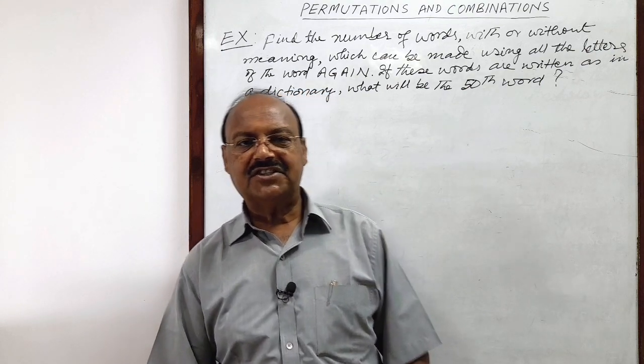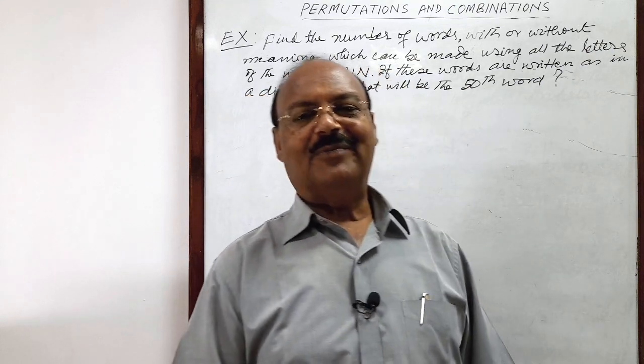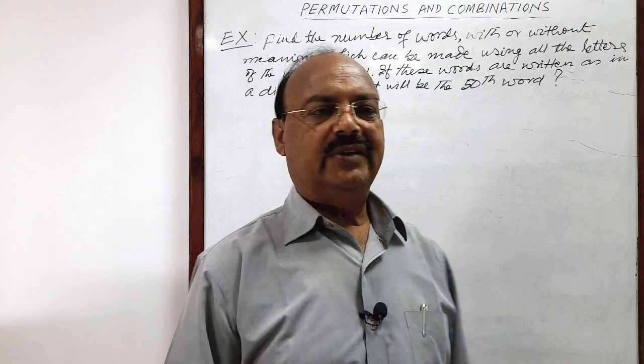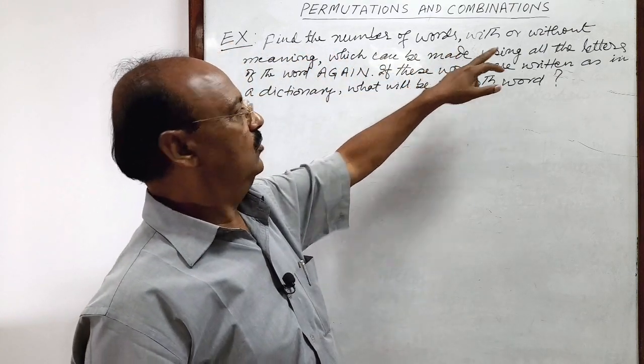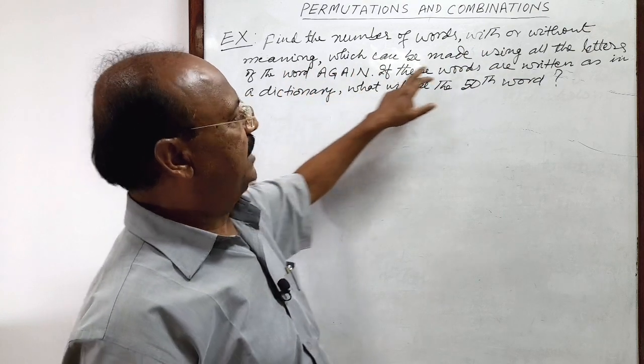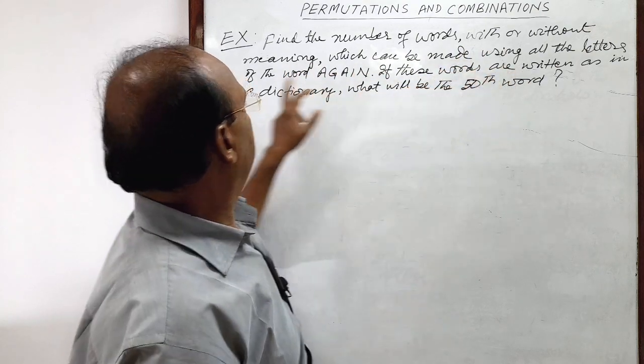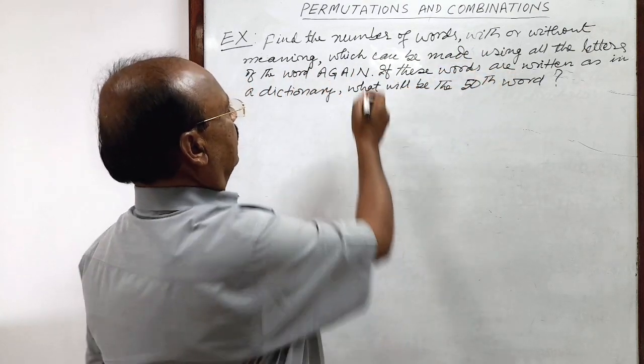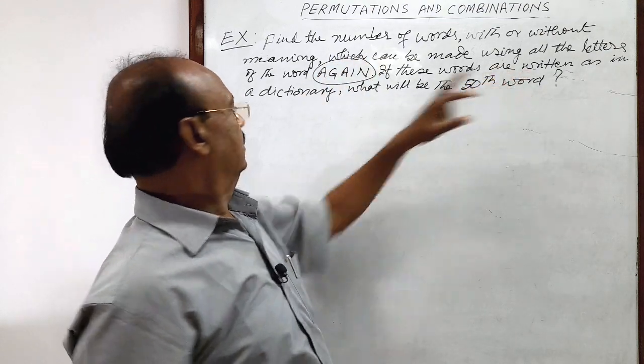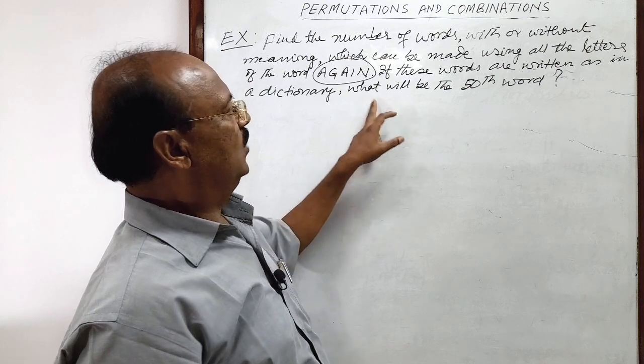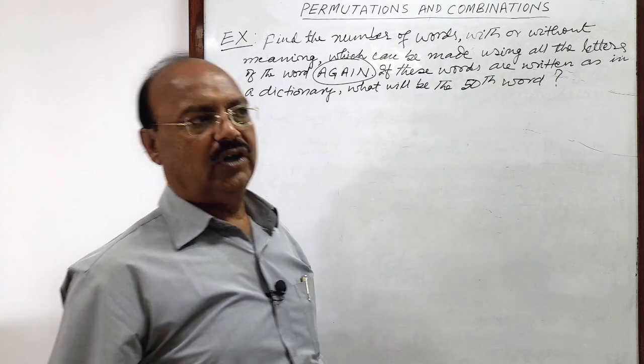Welcome students. Let us see a very interesting and important question from the chapter Permutation and Combination. Let us see the question here. Question is, find the number of words with or without meaning which can be made using all the letters of the word again. If these words are written as in a dictionary, what will be the 50th word?